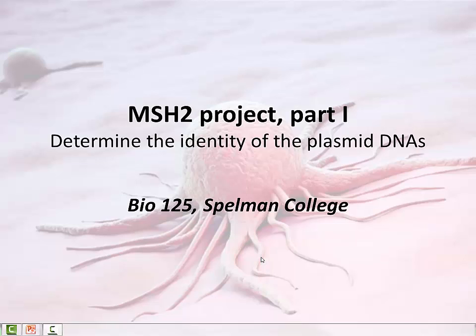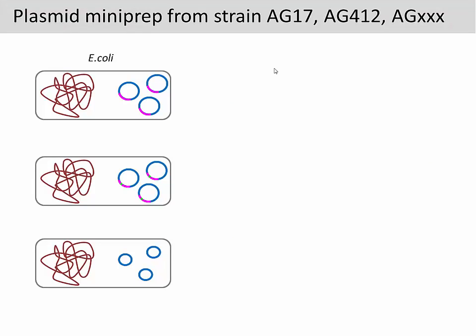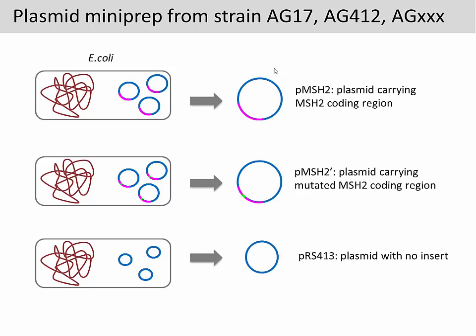In the first part of the project, your goal is to determine the identity of the plasmid DNAs. In the lab, you will be given three E. coli strains with names such as AG17 or AG412. Your first experiment is to isolate the plasmid DNA from the E. coli cells.